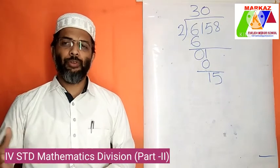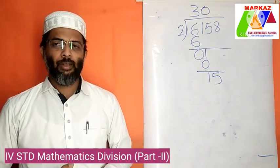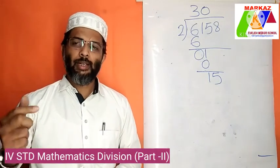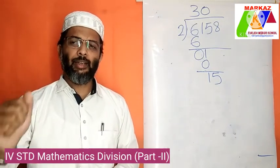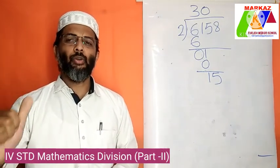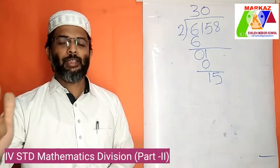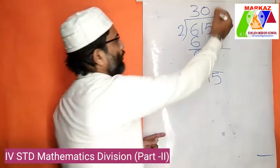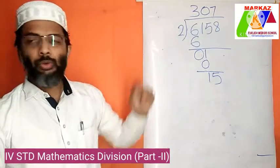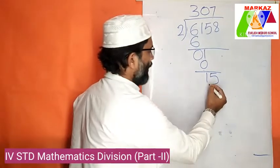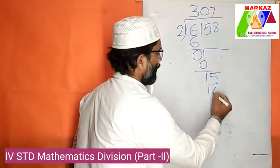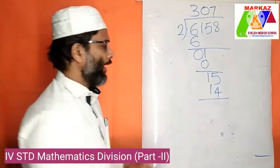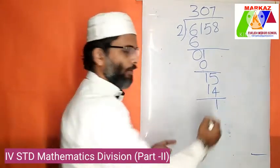How many 2's in 15? Count the multiples of 2: 2, 4, 6, 8, 10, 12, 14 — 7 times. Write 7 on top. Multiply 7 into 2 — it is 14. Subtract 14 from 15 — answer is 1. Then bring down the last digit. It is 8. How many 2's in 18? 9 twos are 18, so 9 times.